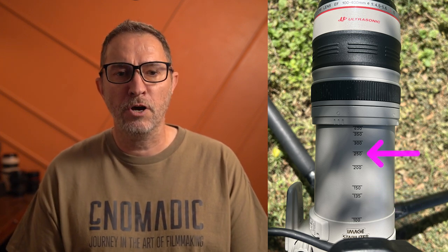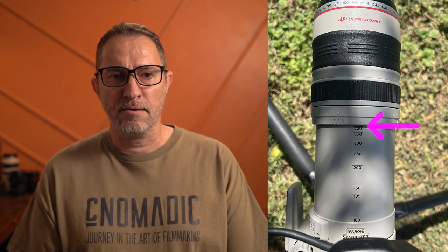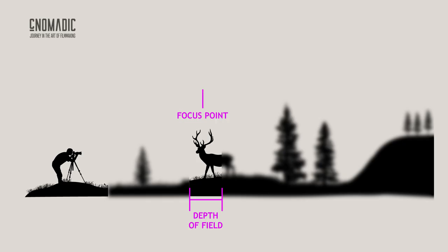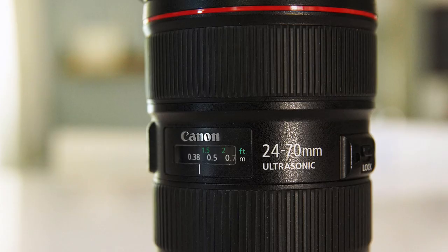The zoom lens will also have the focal length displayed on the zoom ring or body of the camera so that you can identify your current focal length. The focal distance is the distance between the sensor and the focus point. The white markings are in meters, while the green are in feet. When buying a new lens, you can look at the minimum focal distance to know how close to an object you can be and still be in focus.